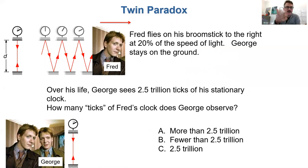So what happens is Fred goes on his broomstick and flies at 20% of the speed of light, while George stays on the ground on Earth. Okay. So George sees these 2.5 million ticks, waits for his whole life to go by, while Fred spends his whole life traveling at 20% of the speed of light. So over George's lifespan, if he sees Fred flying away, how many of these ticks on Fred's light clock will George observe? Will he observe more than 2.5 trillion or fewer?